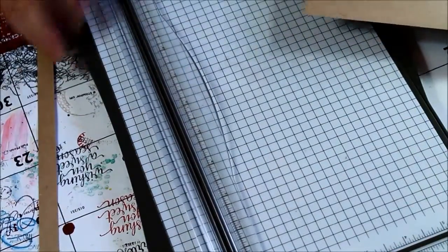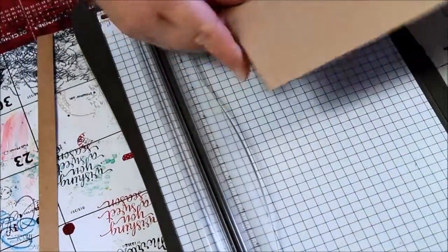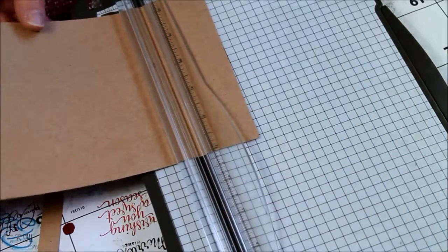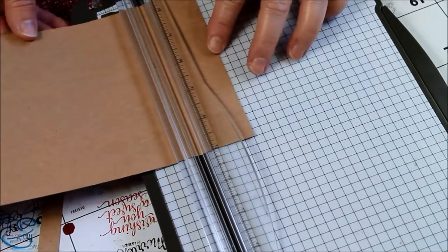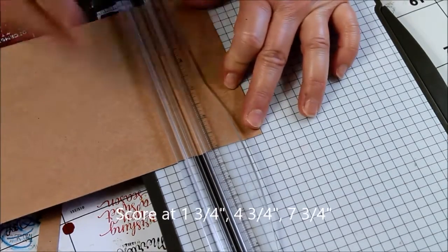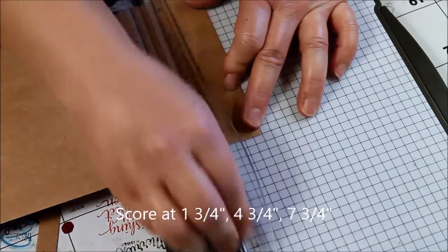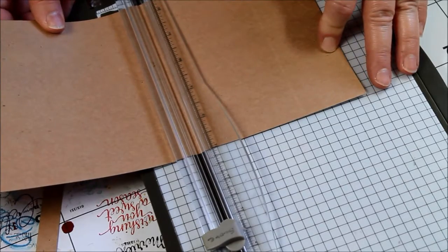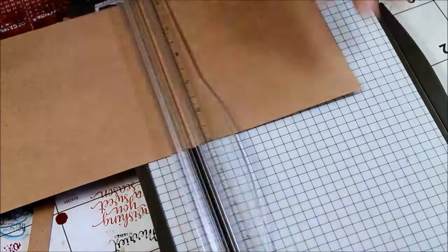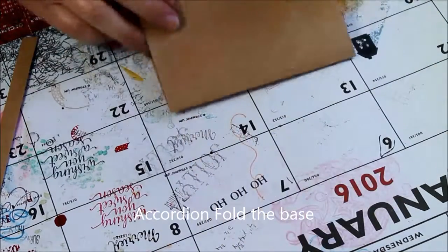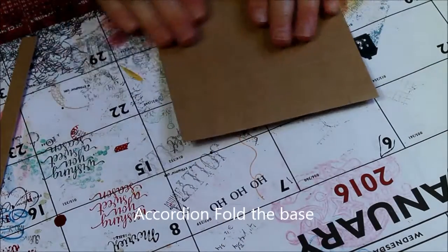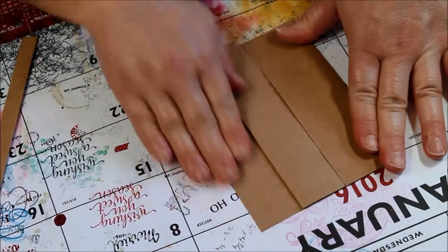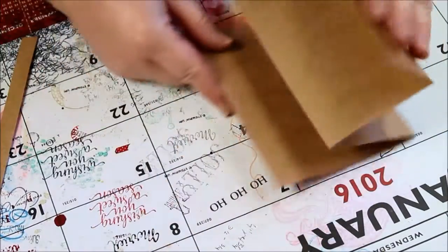Now, we're going to move our cutting blade out of the way here, and we are going to score this. And it's really simple because it's all at 3⁄4, so it's 1 3⁄4. So, just keep that 3⁄4 in mind. And then, we're going to go to 4 3⁄4. That's our card base.